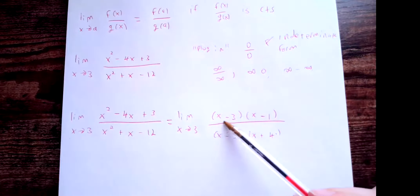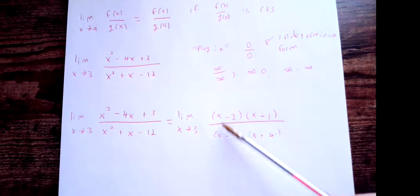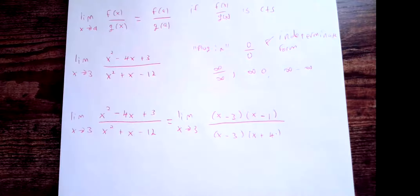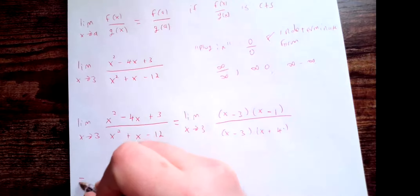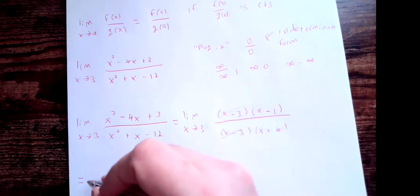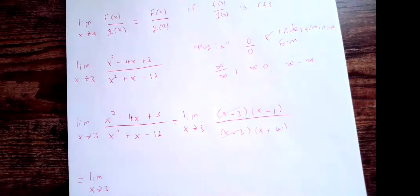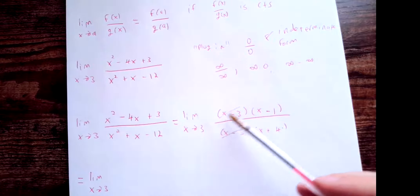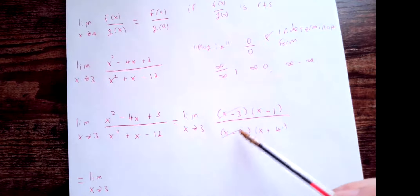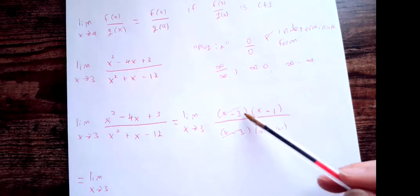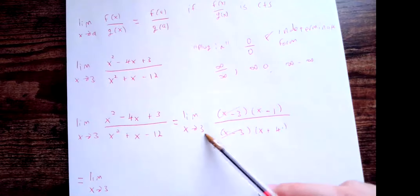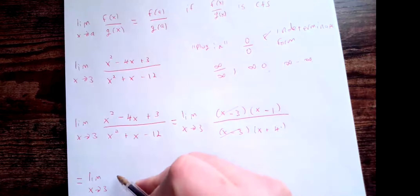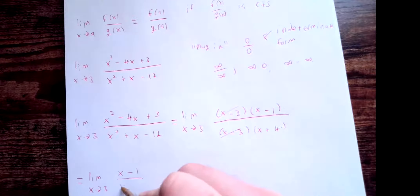This tells us that when x is not equal to 3, we can cancel the common (x − 3) factors. It also explains why we got 0/0 when plugging in x = 3. Since a limit only considers values near 3 — not equal to 3 — it's valid to cancel those factors. We end up with (x − 1) over (x + 4).